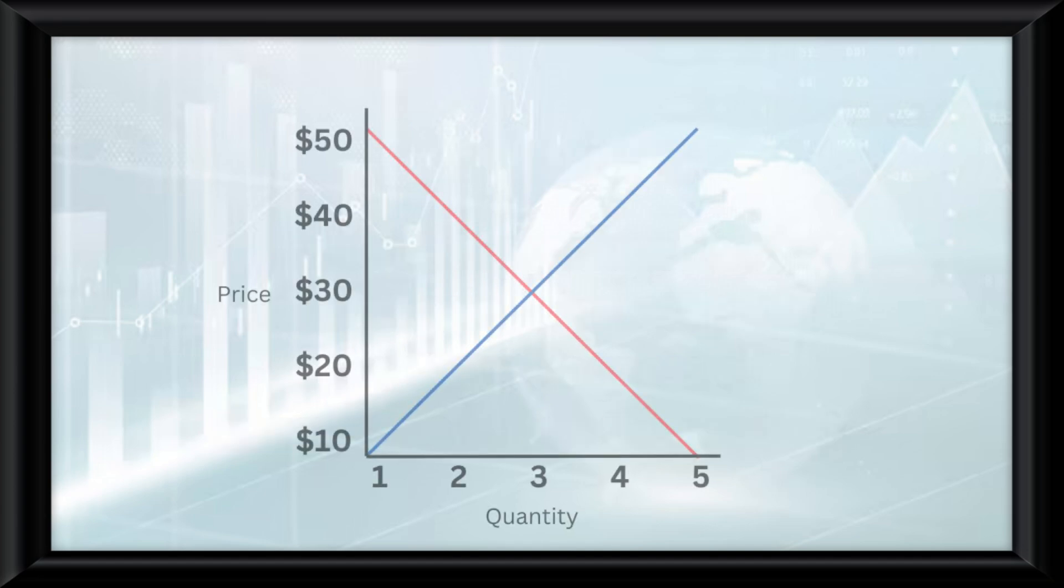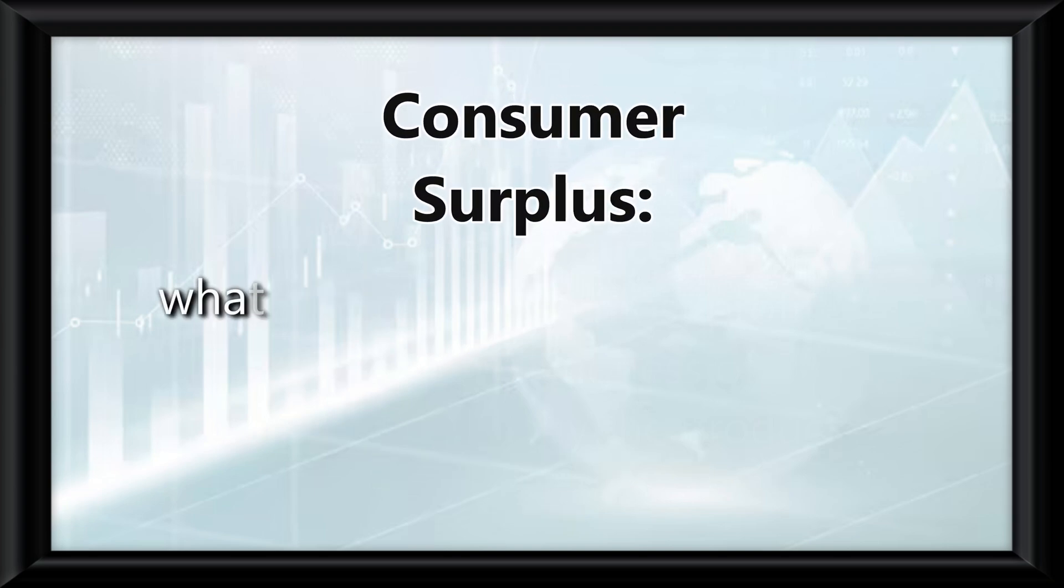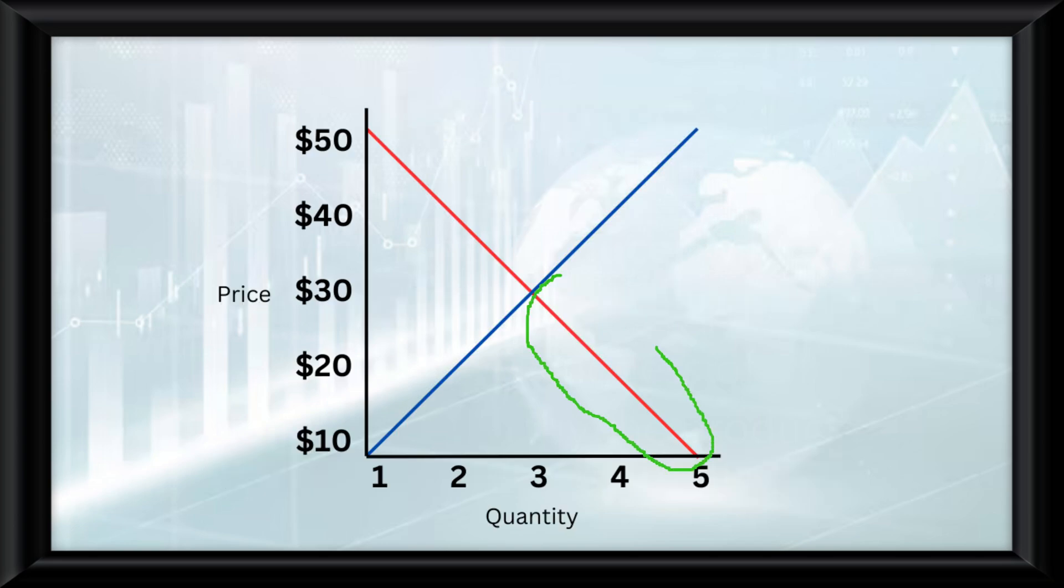On the demand curve, if someone was willing to pay the price of $50 for the product, but they actually paid the market equilibrium of $30, the $20 in between these two is known as the consumer surplus, which is calculated by what the consumers are willing to pay minus what they actually do pay. Anything below the equilibrium point on the demand curve would not be a consumer surplus because nothing would have been bought. The consumer surplus would make a triangle on the graph, which to calculate the surplus from that, you would simply do the area formula of the triangle, one-half base times height, to find the consumer surplus.